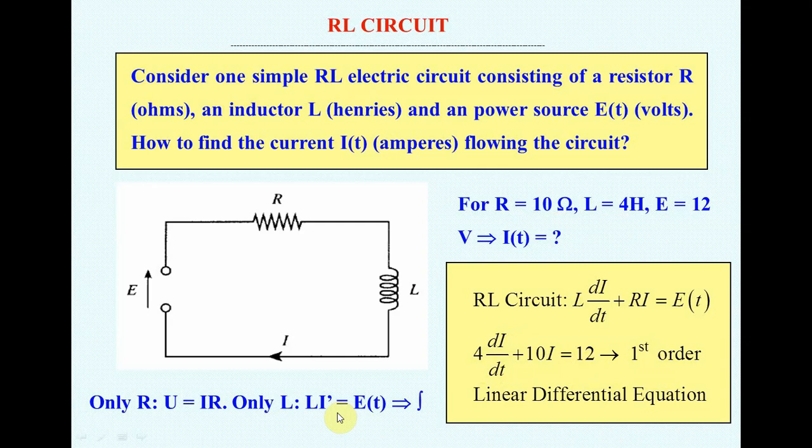We can note that if we have only resistor R, so you find the current I by simple division. If you have only the inductor L, so your equation will be L dI/dt equals E(t). To find I, you must integrate, so this is still right. And now if you have RL circuit, the simple integration cannot help you to find the current. You must solve the differential equation.